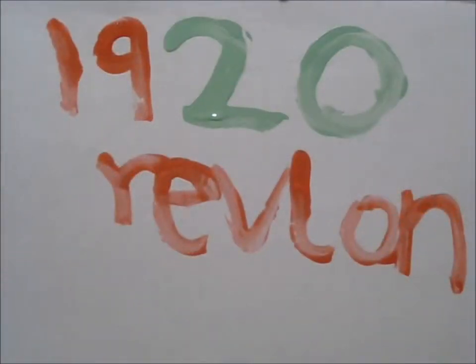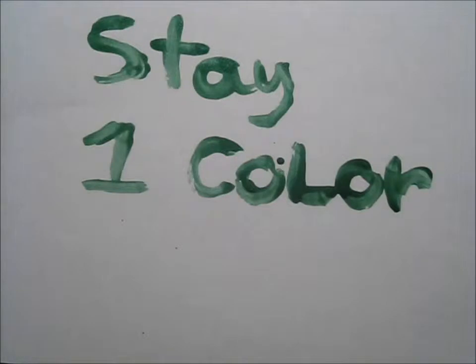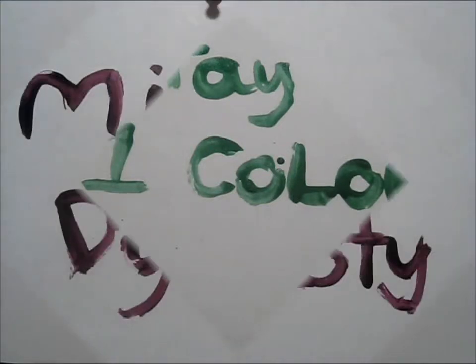One cool fact is that nail polish was invented in 1920 by Revlon. We all want our nail polish to stay one color, and ultraviolet stabilizers are used in nail polish so that it doesn't change color when exposed to light.